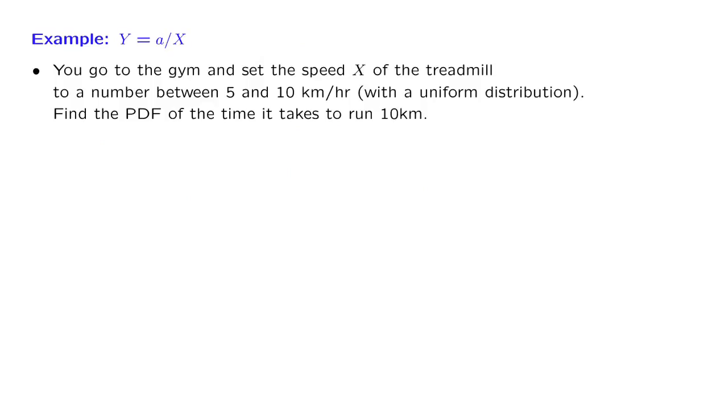Our second example is as follows. You go to the gym. You jump on the treadmill. And you set the speed on the treadmill to some random value, which we call x. And that random value is somewhere between 5 and 10 kilometers per hour. And the way that you set it is chosen at random and uniformly over this interval. So x is uniformly distributed on the interval between 5 and 10. You want to run a total of 10 kilometers. How long is it going to take you? Let the time it takes you be denoted by y. And the time it's going to take you is the distance you want to travel, which is 10, divided by the speed with which you will be going. So the random variable y is defined in terms of x through this particular expression. We want to find the PDF of y.